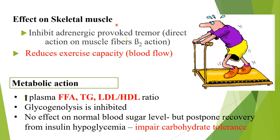Effect on skeletal muscle: beta blockers inhibit adrenergically-provoked tremor. Direct action on muscle via beta-2 receptors reduces exercise capacity as blood flow decreases. Metabolically, they increase plasma free fatty acids and triglycerides, lower HDL-to-LDL ratio. Glycogenolysis is inhibited in the liver; no effect on normal blood sugar but recovery from insulin-induced hypoglycemia is delayed. Impaired carbohydrate tolerance can occur.